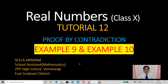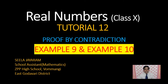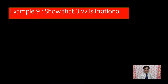Good morning students. Welcome to the 12th tutorial of the chapter Real Numbers. In this tutorial, we are going to discuss example 9 and example 10 from our textbook. This is example 9: Show that 3 into square root of 2 is irrational. So, this is the problem we have.